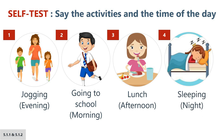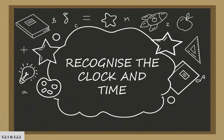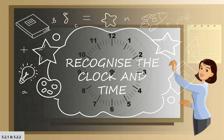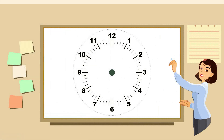Good try to all of you. Remember, we do different activities at different times of the day. Now let's recognize the clock and time. This is a clock face. There are numbers from one to twelve. I'm sure you have seen a clock face before. There are two hands on a clock face — one is short and one is long.